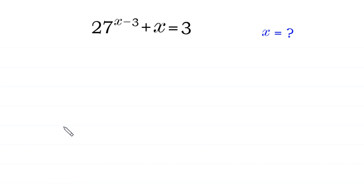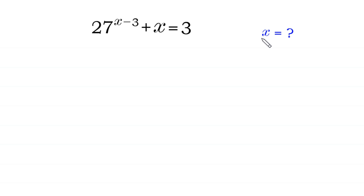Hello, welcome to how to solve this very nice exponential equation. 27 to the power x minus 3 plus x is equal to 3. We need to find all possible values of x.